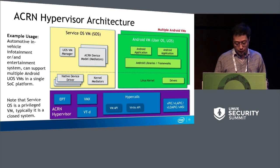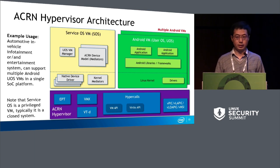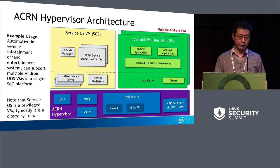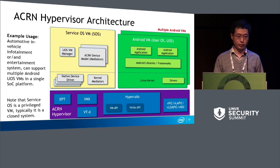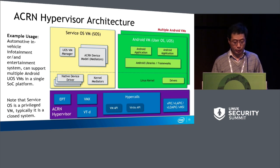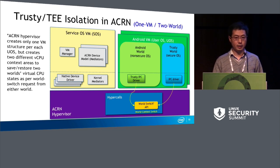In this architecture, there is a Service OS running on the left, which is a privileged OS. It's a closed system. It has most of the native drivers including the RPMB driver, the eMMC or UFS storage driver, and can provide device mediation or emulation for all the guest VMs. Storage as an example — the guest will see virtual storage. It can also provide user VM management. Since we need to support Android here, we build a similar trusted execution environment on top of this hypervisor.